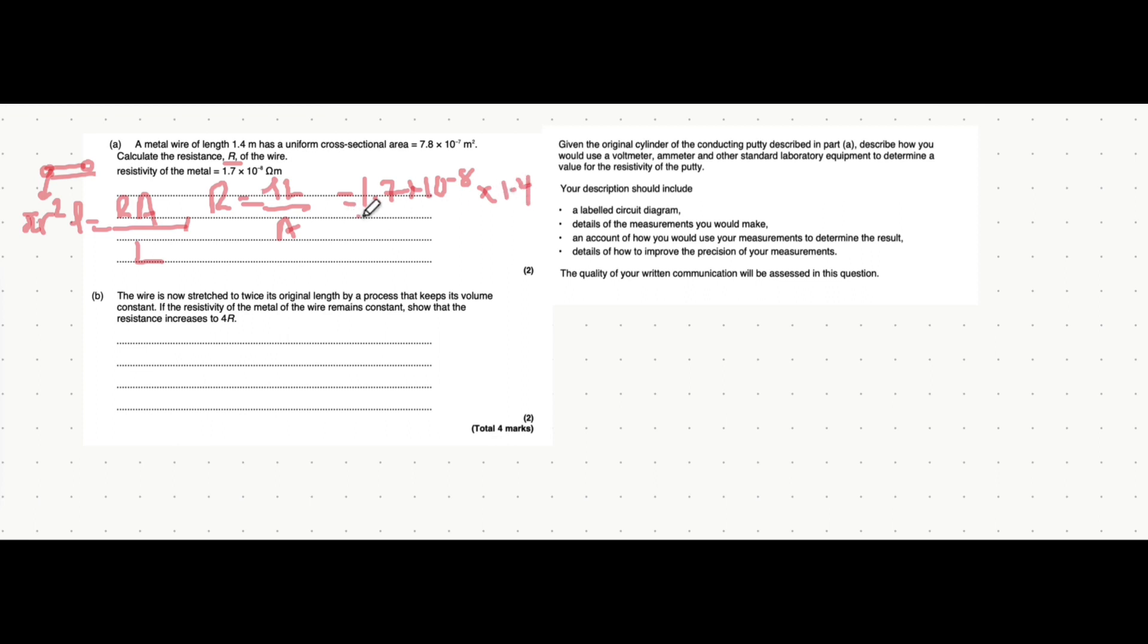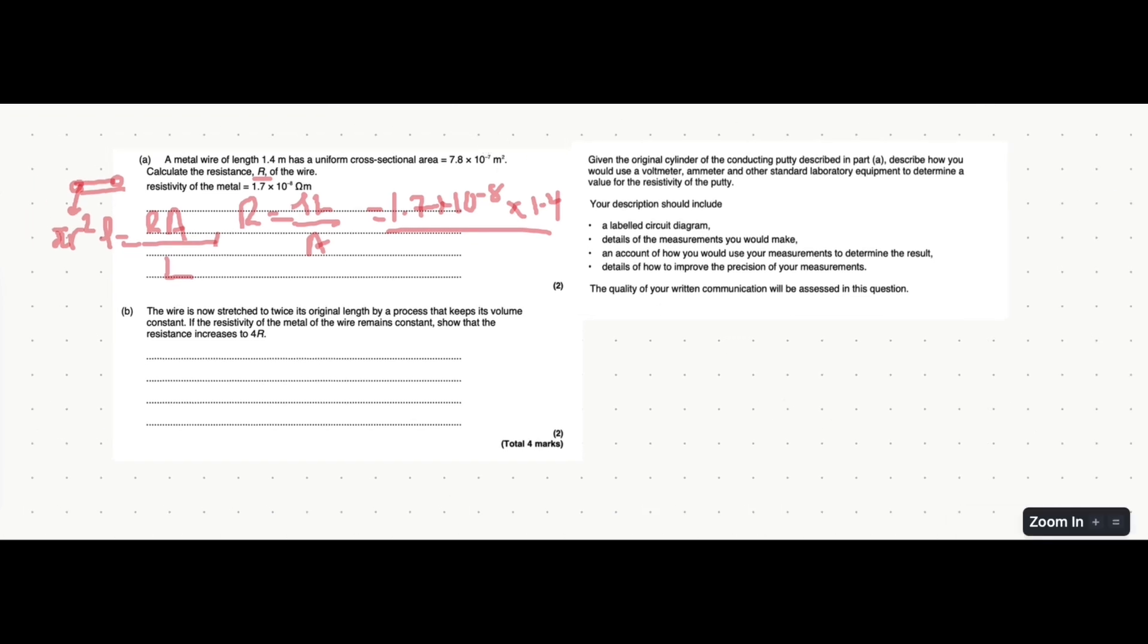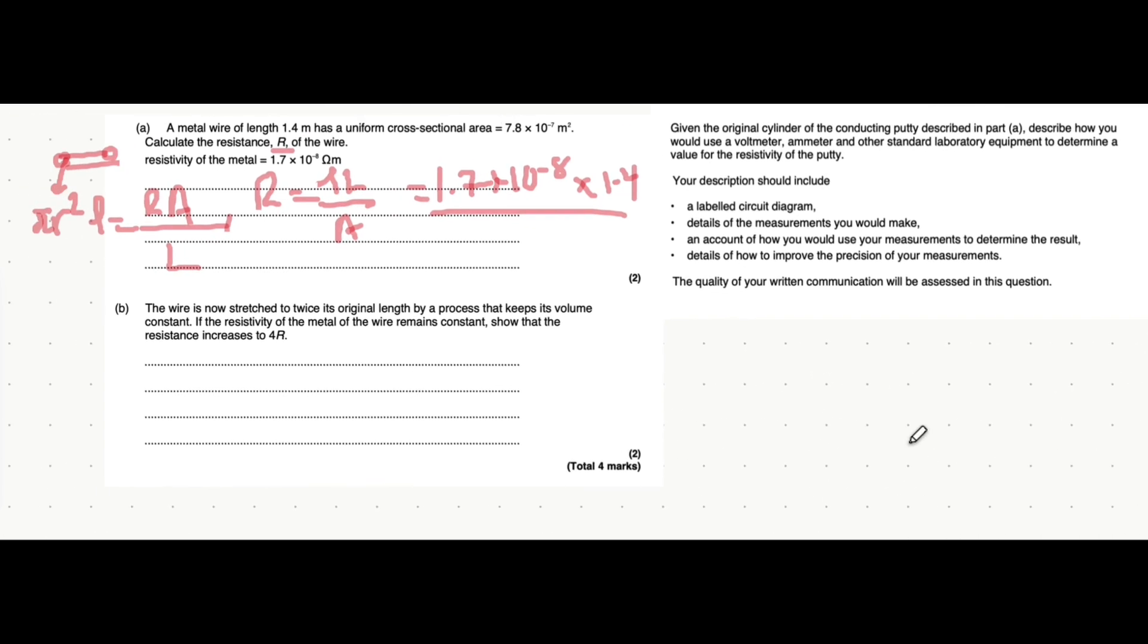You multiply that by the length of 1.4 meters. And you divide all of that by the cross-sectional area, which is a value of 7.8 times 10 to the power of minus 7. Actually, I'm just going to see if I can zoom in a little bit. Yeah, hopefully that helps. So, that's an area of 7.8 multiplied by 10 to the power of minus 7. You put all of that into your calculator, which I'll just very quickly do.